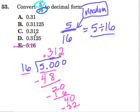And notice 0.312. So A and B are out. So we can tell that the answer has to be D, which is 0.3125.